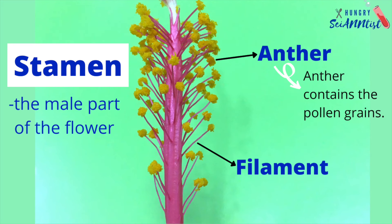Stamen, the male part of the flower. It has two parts: anther and filament. Anther contains the pollen grains.